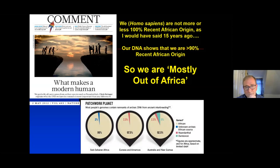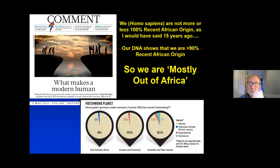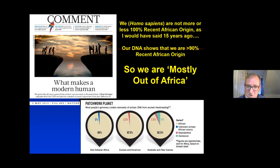Fifteen years ago I would have said for all intents and purposes we're pretty well 100% recent African origin. Now our DNA suggests we are more than 90% recent African origin, but those other bits are there and they're important. To coin a phrase — I think it was Svante Pääbo who said this — we're mostly out of Africa. That's probably the best way of describing it.